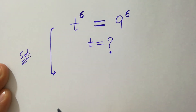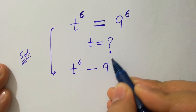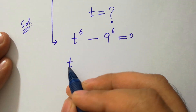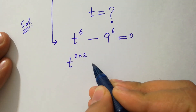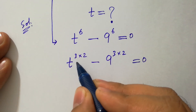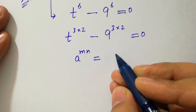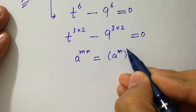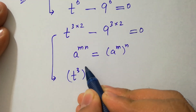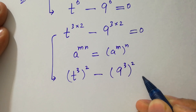This problem can be written as t to the power 6 minus 9 to the power 6 equals 0. It can be written as t to the power 3 times 2 minus 9 to the power 3 times 2 equals 0, since 3 times 2 is 6. As we know, a to the power m·n equals a to the power m, to the whole power n. Then it will be (t³)² minus (9³)² equals 0.